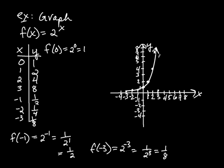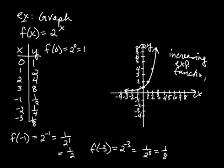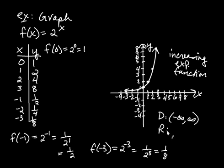This is called an increasing exponential function — we call a function increasing when you go from left to right on the graph and the function gets larger. The domain of this function is from negative infinity to infinity; you can plug in whatever real number you want. But the range — the y-values that come out — never quite reach 0, so the range is from 0 to infinity.